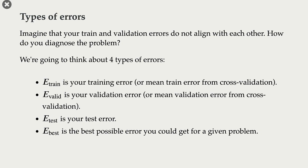Either your train and validation errors are very high — that is, your accuracy is very low — or your train and validation errors do not align with each other. To diagnose this, we will talk about four types of errors: E-train is your training error, E-valid is your validation error, and E-test is your test error on the test split.